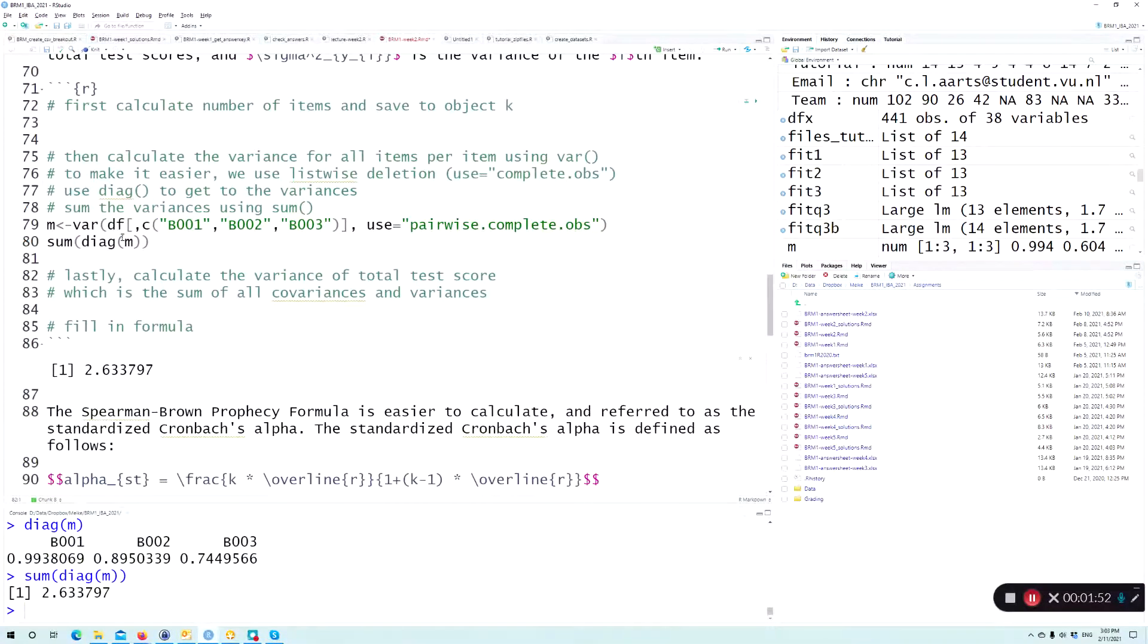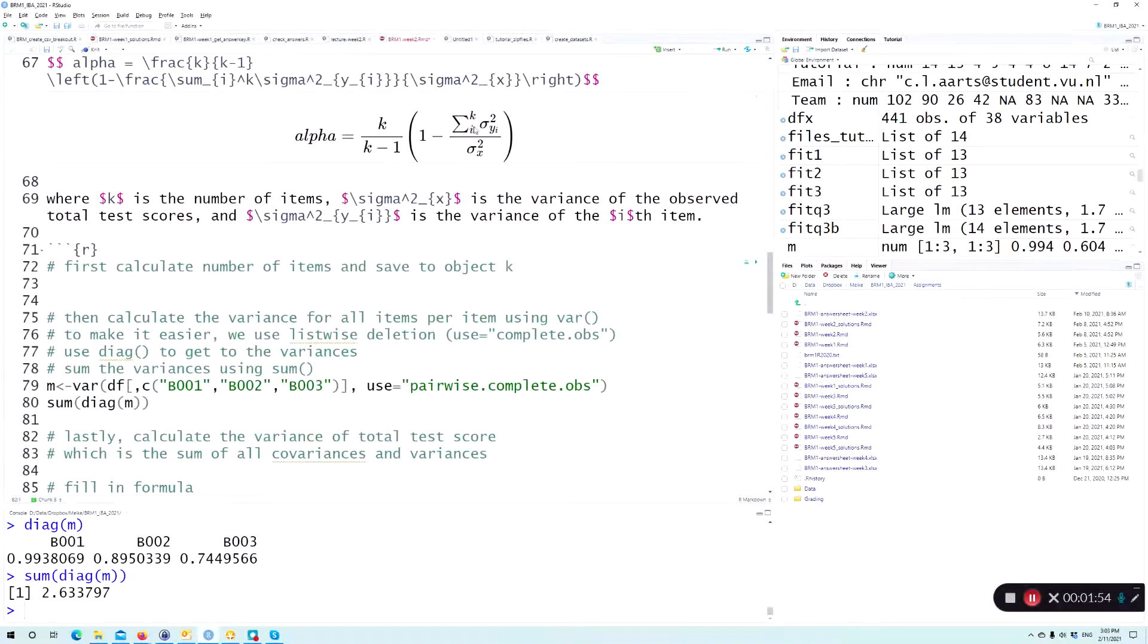Now with the sum, if we sum the diagonal, this is actually this number here. So the row two means variance, and this is the variance of one variable. This is the variance and covariance of all the variables together. Here we sum only the variances, and here we sum all the covariance and variances.